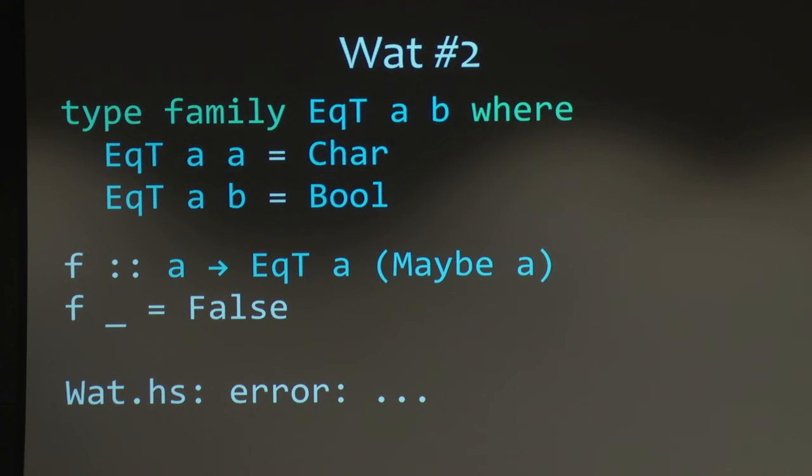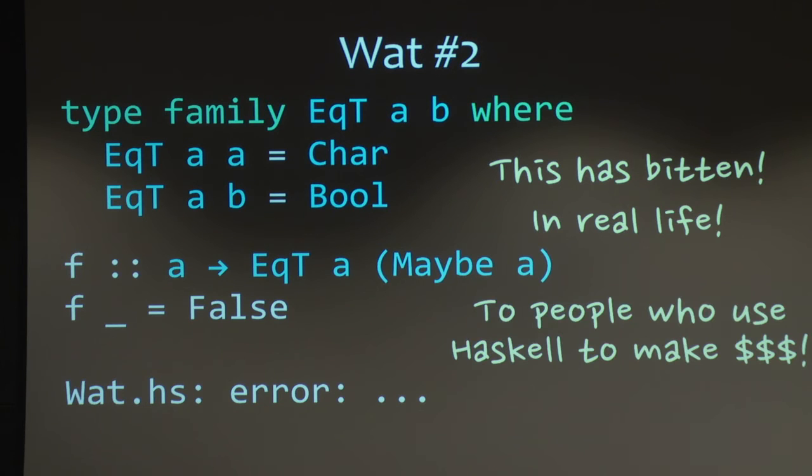But GHC doesn't like it. And lest you think that this is a strange example that I just cooked up, this is actually bitten. In real life, we have bug reports saying, why doesn't this happen? And bug reports from people who use Haskell at their business. This problem stops people from making money. We want them to do that with our functional programming languages.